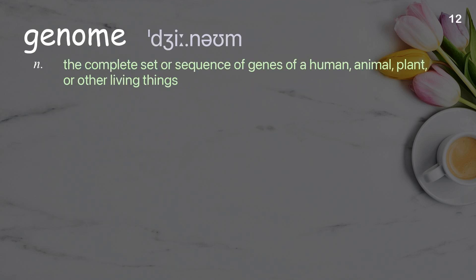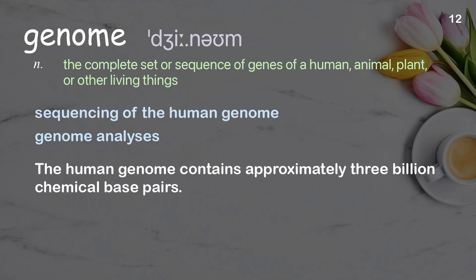Genome: the complete set or sequence of genes of a human, animal, plant, or other living thing. Examples: sequencing of the human genome, genome analyses. The human genome contains approximately three billion chemical base pairs.